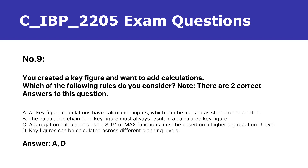Number 9. You created a key figure and want to add calculations. Which of the following rules do you consider? Note: there are two correct answers to this question. A. All key figure calculations have calculation inputs, which can be marked as stored or calculated. B. The calculation chain for a key figure must always result in a calculated key figure. C. Aggregation calculations using sum or max functions must be based on a higher aggregation level. D. Key figures can be calculated across different planning levels. Answer: A, D.